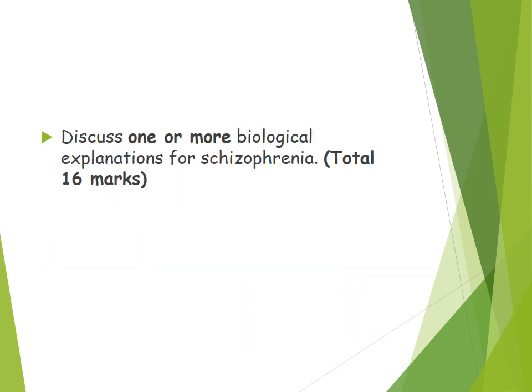For a 16-marker question — for example, 'discuss one or more biological explanation of schizophrenia' — you could focus solely on the dopamine hypothesis, or include another explanation such as genetics or neural correlates. You could also get a 16-marker asking you to outline and evaluate the dopamine hypothesis specifically. Remember, for a 16-marker you need two AO1 paragraphs and three to four evaluation points.